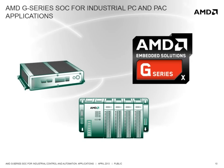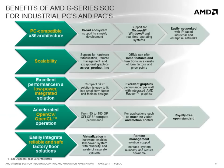The AMD G-Series SOC is a good solution for industrial PC and programmable automation controller or PLC applications for a variety of reasons. The benefits include its PC-compatible x86 architecture, which offers a broad ecosystem of tools, operating systems, and software solutions, and its support for Microsoft Windows and real-time operating systems, as well as its ability to be easily networked with IP-based industrial and enterprise networks. The scalability of features such as hardware virtualization and remote management across the AMD embedded product line make leveraging these features easier across OEM products at various performance and price points. Excellent performance in a low-power integrated SOC makes it easy to design into small form factors.